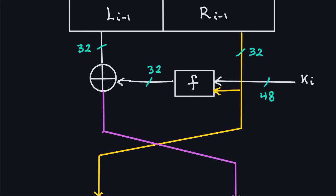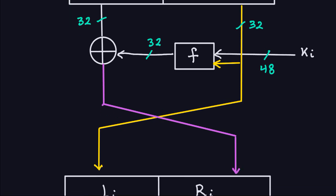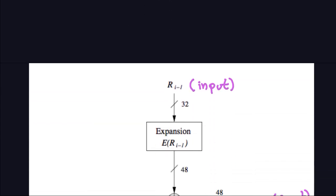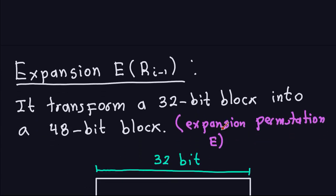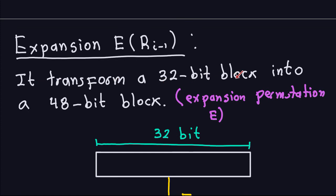Inside that F function there are still some black boxes to explain. What we are going to look at in this video is what this expansion permutation box is doing. It takes any 32-bit block and transforms it into a 48-bit block — and this does not use the key at all. It is just a fixed transformation from 32 bits to 48 bits.